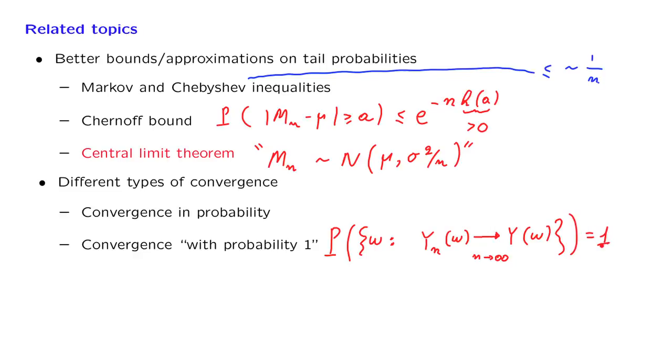That is, there is probability 1, that is, essential certainty, that when an outcome of the experiment is obtained, the resulting sequence of values of the random variables yn will converge to the value of the random variable y.